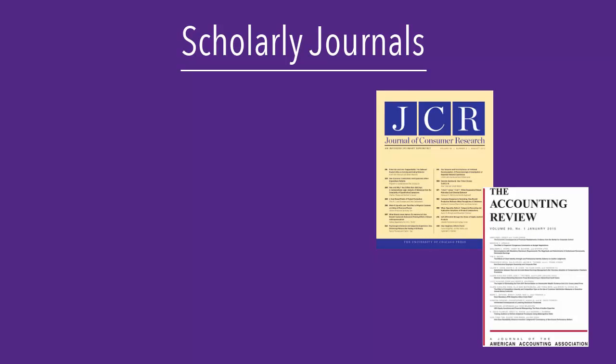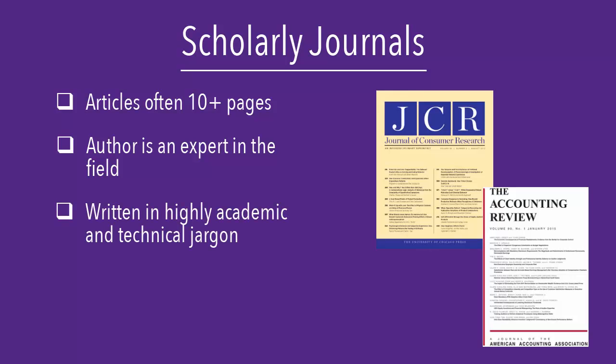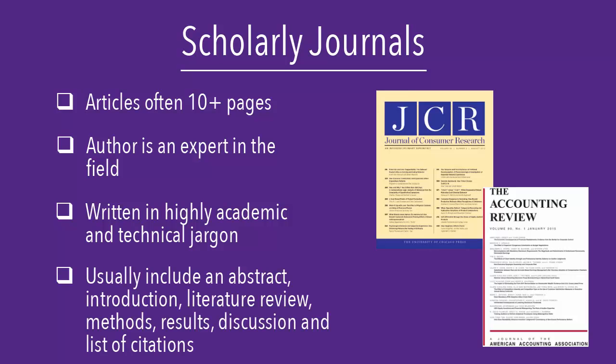Scholarly journals, sometimes called academic journals, don't look like magazines at all. Articles are often long, usually more than 10 pages, and are written by experts, such as a professor, in a field. The language of the article is usually highly academic and contains technical jargon related to the subject matter.